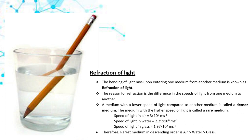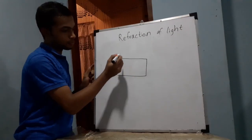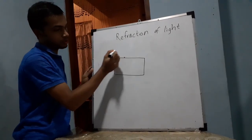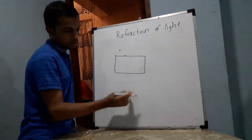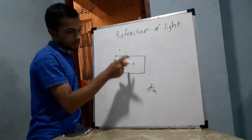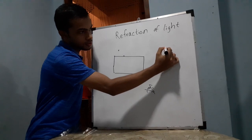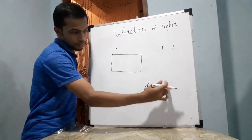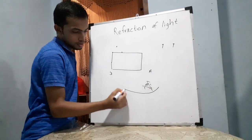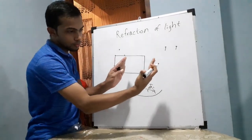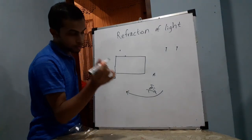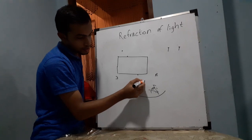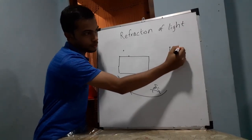Bending of light rays upon entering one medium from another medium is known as refraction of light. In this experiment, if you keep two pins — one pin touching a glass block and another pin a little bit further — and look through the glass block, you will see the two pins appear apart from each other. When you move your eye from position A to D, you will see the pins move closer and then the two pins will be in line. At that moment, take another two pins and place them collinear to the first two pins.